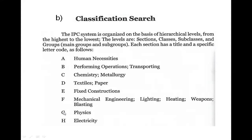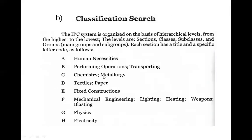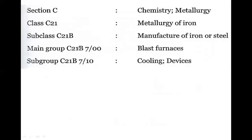The section is C, which stands for chemistry or metallurgy. C is the section and 21 is the class — metallurgy of iron. The subclass is B. The main group is the manufacture of iron, represented as 7.00 or 7.3. The subgroup is the cooling device. So the classification number is very important while searching.